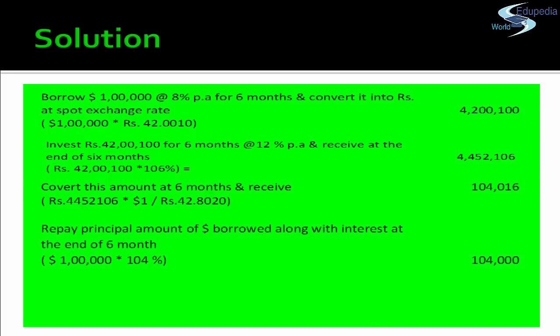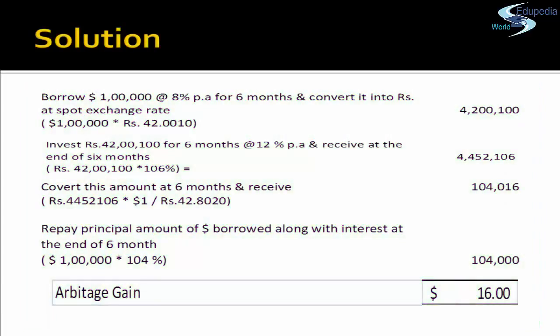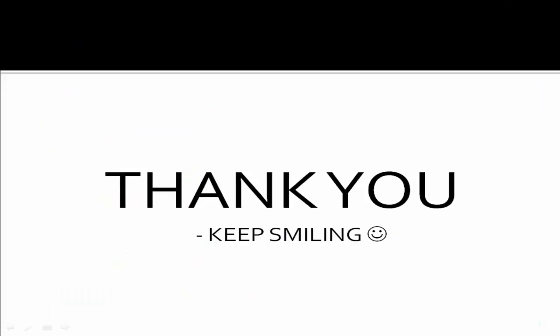You borrowed USD 1,00,000 and the interest payable at 8% per annum for six months is USD 4,000, so total repayment is USD 1,04,000. After six months you have USD 1,04,016 in hand, making an arbitrage profit of USD 16. That concludes this chapter. If you have any queries, please leave a comment. Thank you and have a nice day.